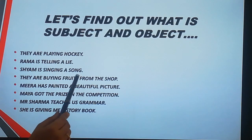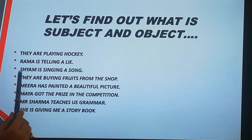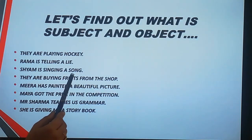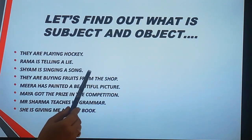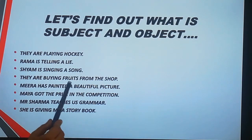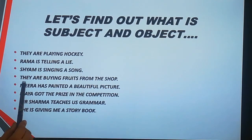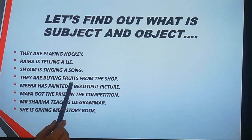Sham is singing a song. Who is singing a song? Sham. So Sham is subject. What is he singing? A song. So a song is direct object. Who are buying fruits? They. So they is subject. And what are they buying? They are buying fruits. Fruits is our direct object.